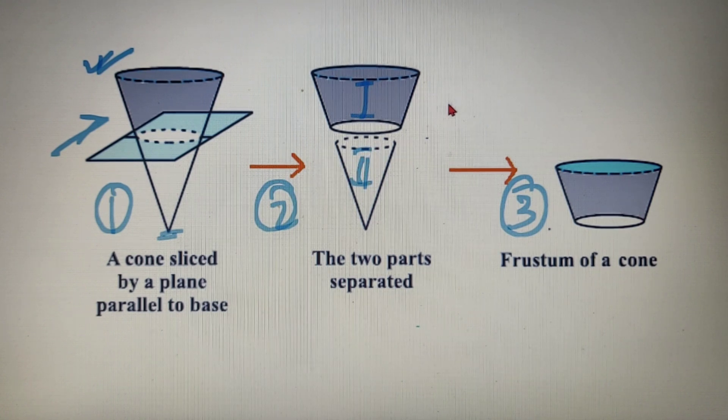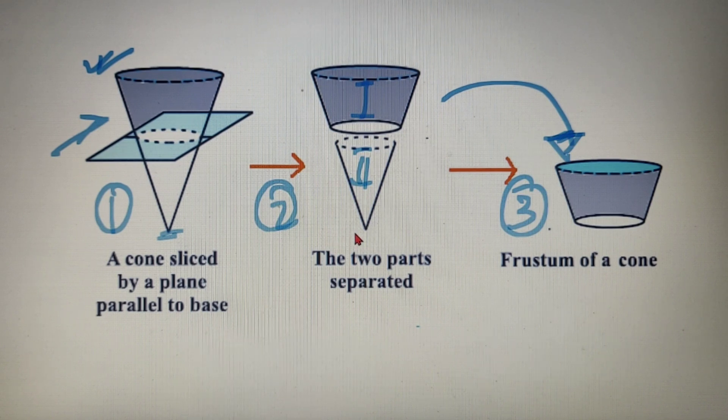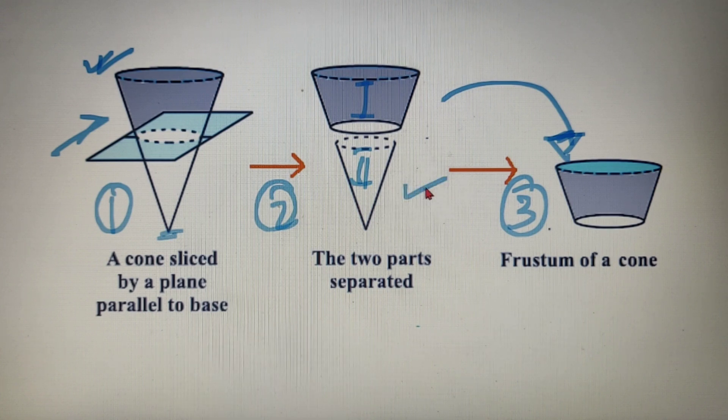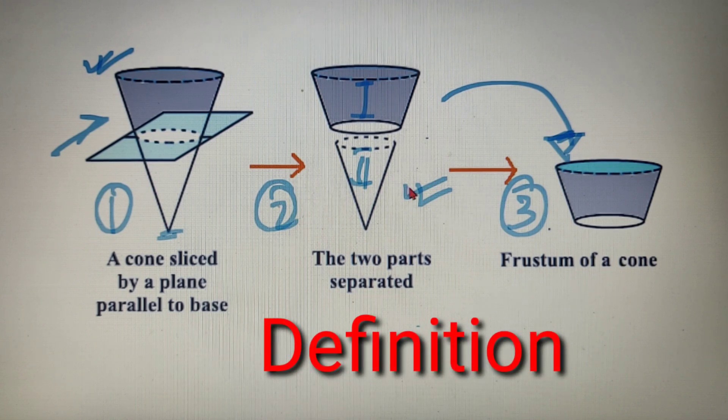Now we have just seen how a frustum of a cone looks. So we can say that the first part is the frustum of the cone and we are not so interested in the second part because the second part is somewhat a smaller version of a cone and we already know all the formulas for that. So by this pictorial representation we can form a clear definition of the frustum which goes like this.